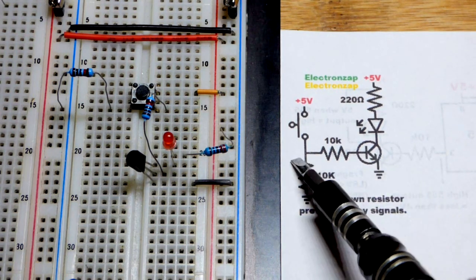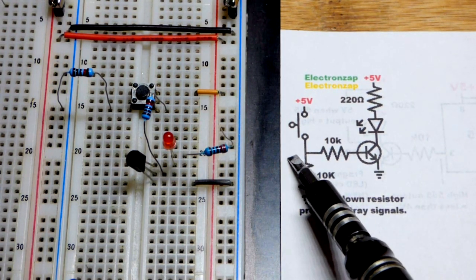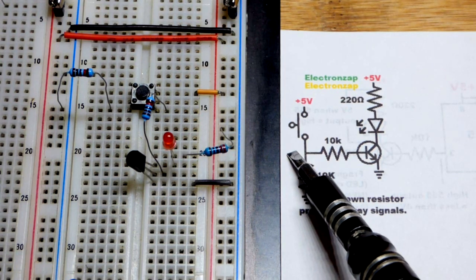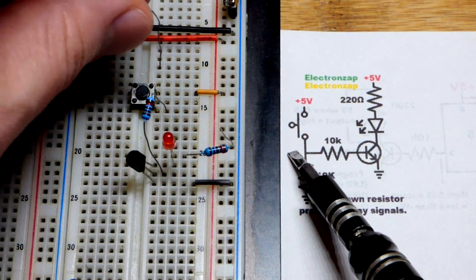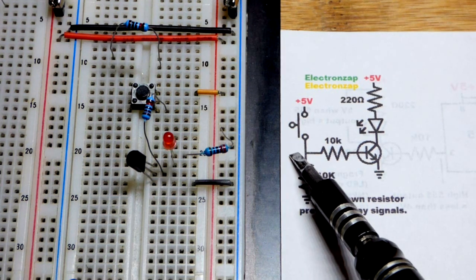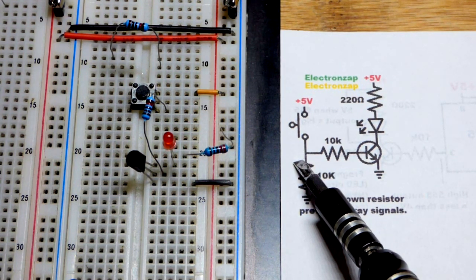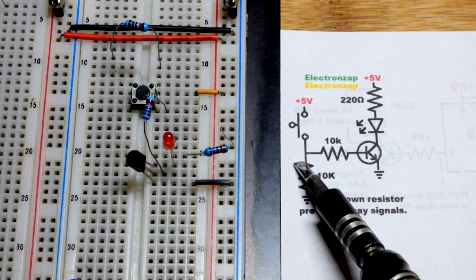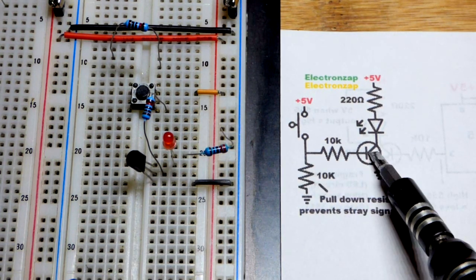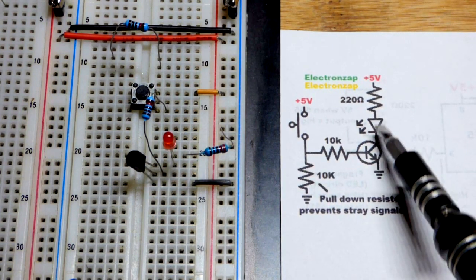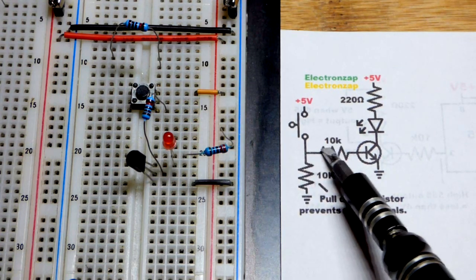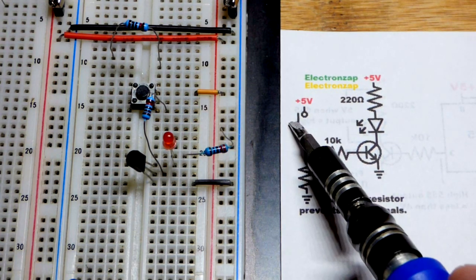The NPN bipolar junction transistor in the basic form without a pull-down resistor, so we'll get rid of it. We don't need it to get a working circuit. And this is just going to be a review. I actually assume you already know how this switch circuit works. But in any case, we need a small base-to-emitter current to allow a large collector-to-emitter current. So we have a somewhat high-value resistor there, 10 kilo-ohm.